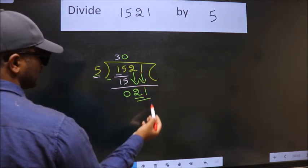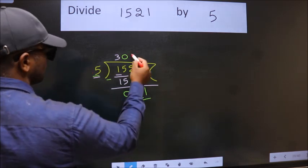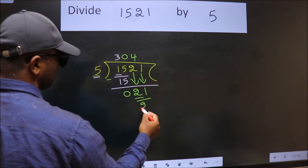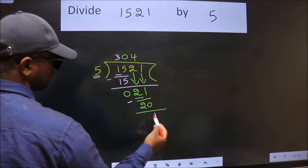So 21. A number close to 21 in the 5 table is 5 times 4 equals 20. Now we subtract. We get 1.